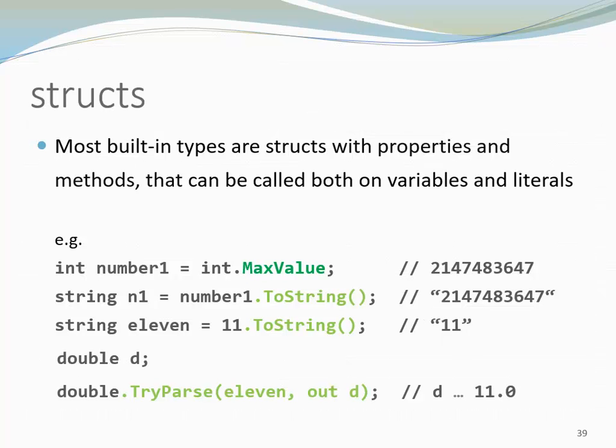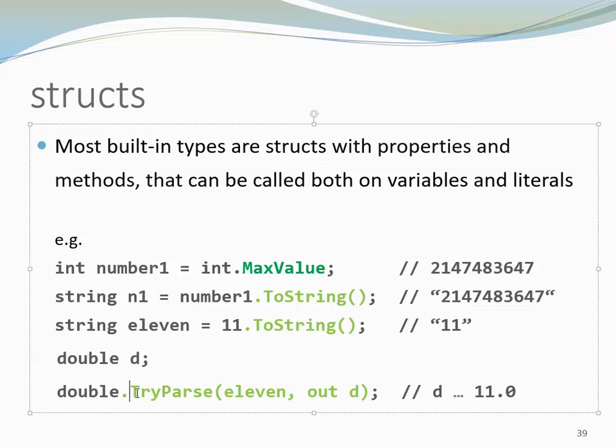Now there are many more methods besides toString, for example tryParse. TryParse tries to parse a given string, in my case 11, which is this string right here. And we try to parse that 11 to a variable of type double. This is possible so tryParse is going to return the value true because 11 can be parsed to a double and the result is 11.0.